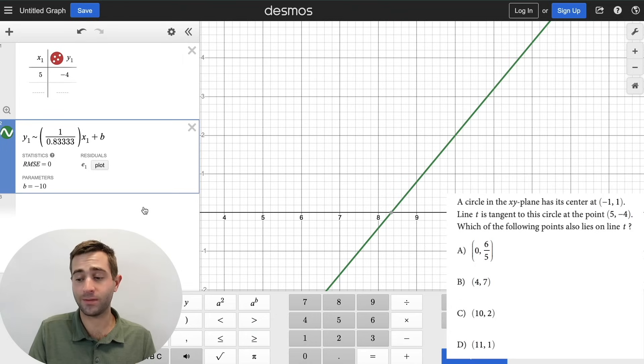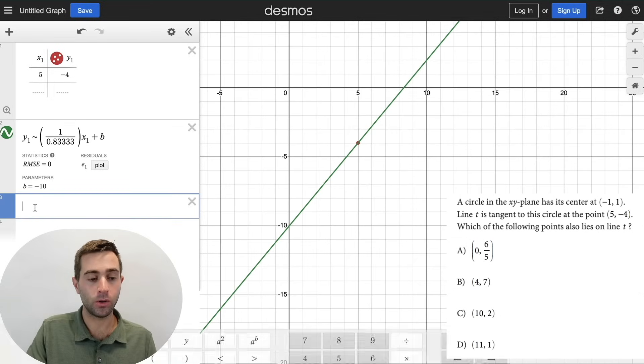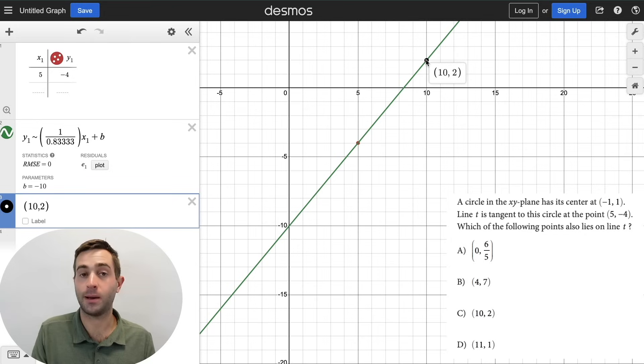Now this is going to give us the equation of our line. Now we want to figure out which of these points lies on line t. So as we go through, we can just use this really nice function. We can put in a point, and we can see at 10 comma 2, we intersect that point. And that's how we can use Desmos to solve one of the most challenging lines questions you could see on your test.